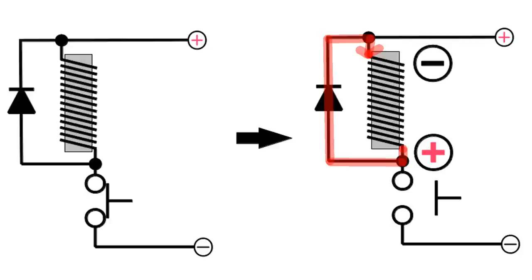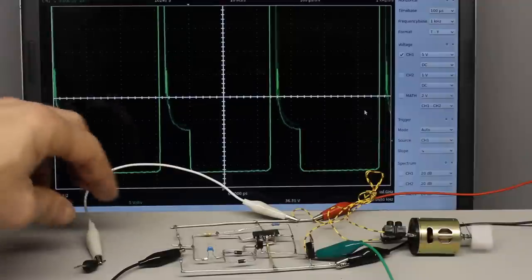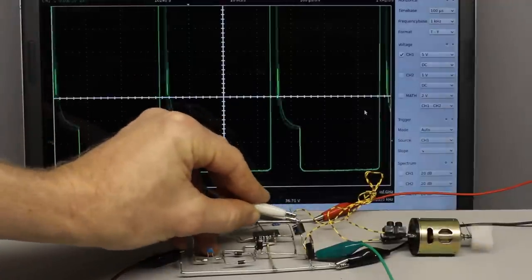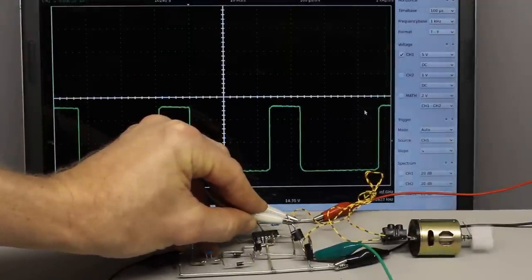When the transistor is turned off, the diode becomes forward biased relative to the voltage caused by the inductor. The current running through the diode causes a negligible voltage drop of just 0.6V.